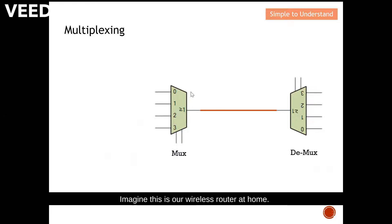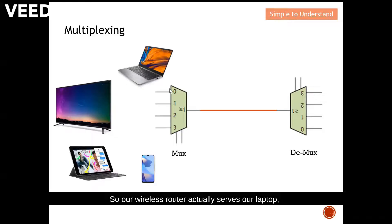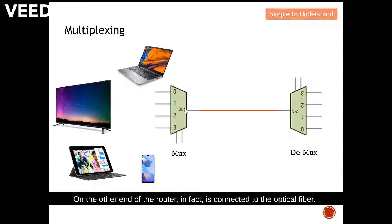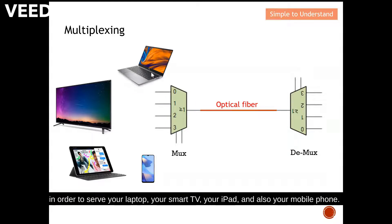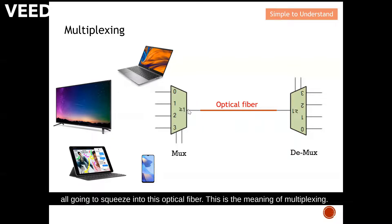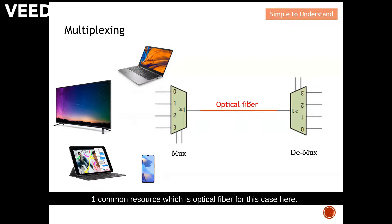Imagine this is our wireless router at home. Our wireless router serves our laptop, our smart TV, our iPad, and our mobile phone. On the other end of the router is an optical fiber, which has a higher capacity — it can carry more data compared to the four different channels. The capacity of this optical fiber is subdivided into four portions to serve your laptop, smart TV, iPad, and mobile phone. All the resources are squeezed into this single optical fiber — that is the meaning of multiplexing. All users are squeezed into one common resource, which in this case is the optical fiber.